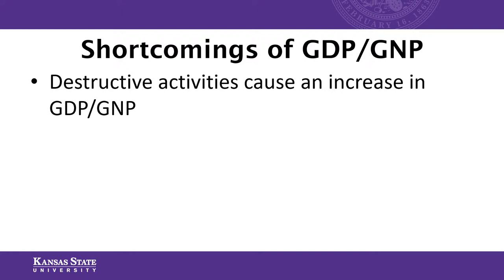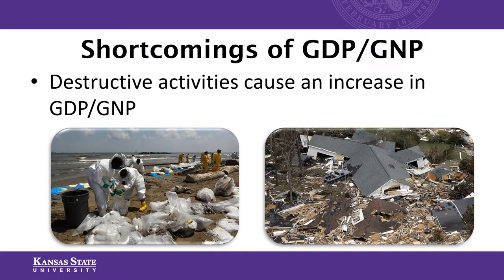A further shortcoming of GDP and GNP is that destructive activities within a country can actually cause GDP to go up. Examples include the Deepwater Horizon oil spill in the Gulf of Mexico and Hurricane Katrina — both cost billions of dollars, took human lives, and destroyed ecosystems, but in the long run both disasters caused GDP and GNP to increase because of the money spent on cleanup and recovery. There is obviously something wrong with an economic measure if destruction causes an increase in GDP.